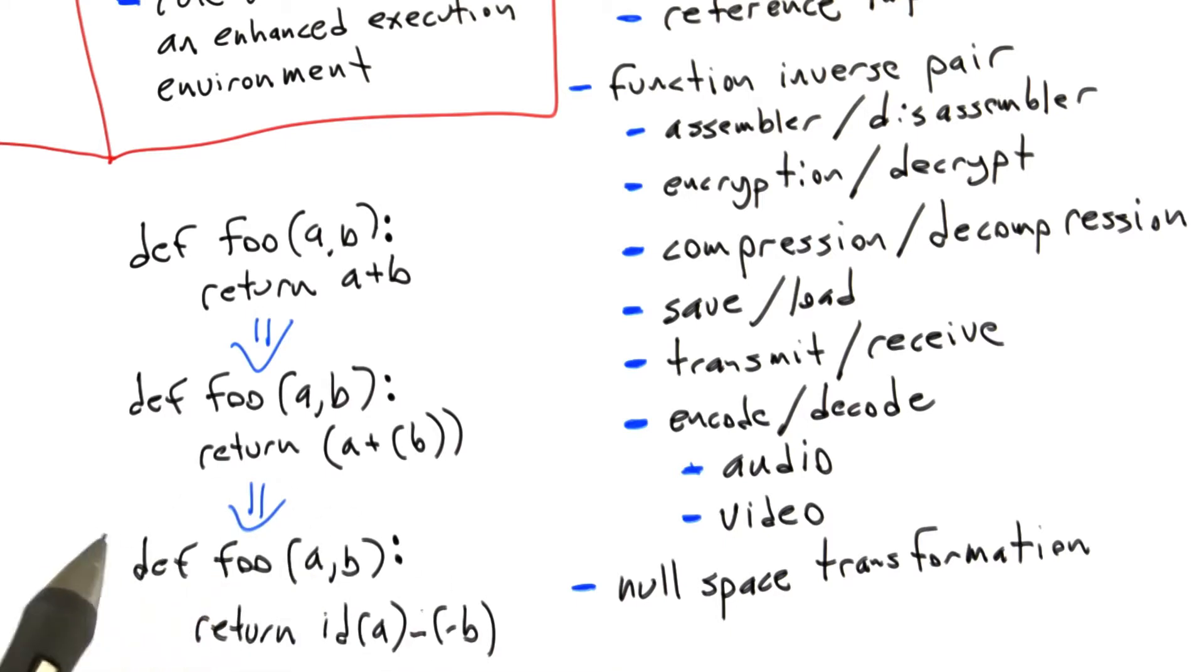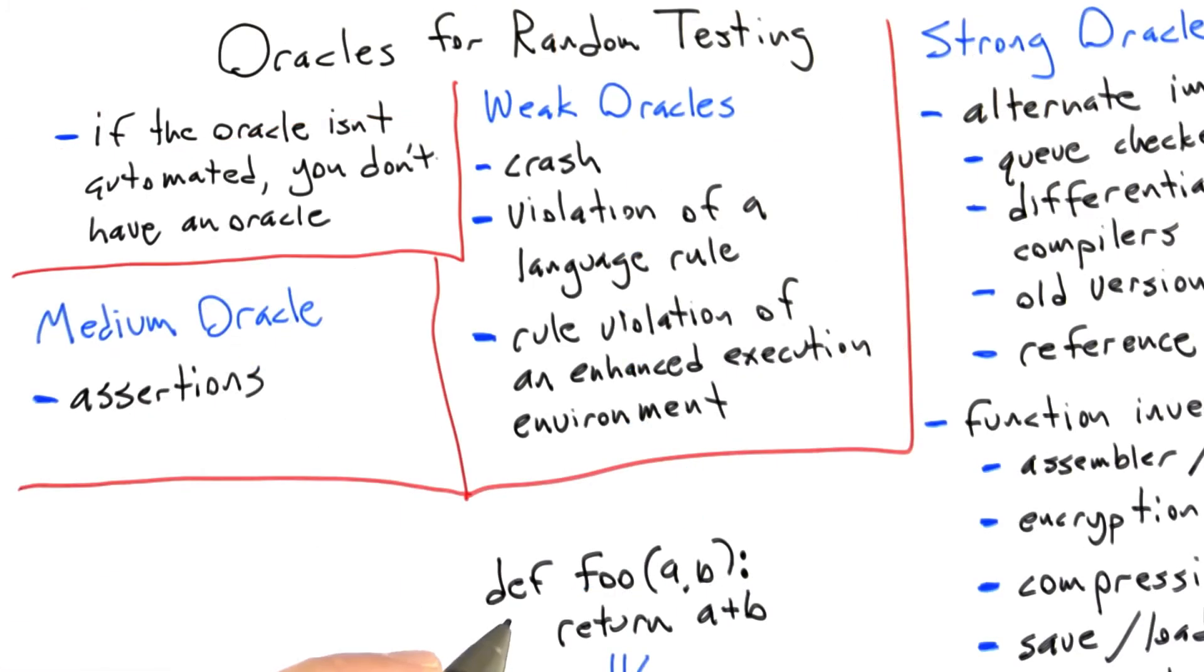And I've heard of these kind of things, and so I don't have any personal experience using null space transformations to find bugs, but I've heard of people doing this kind of thing, and apparently it can be useful.